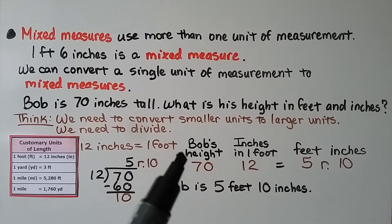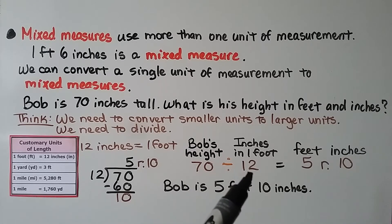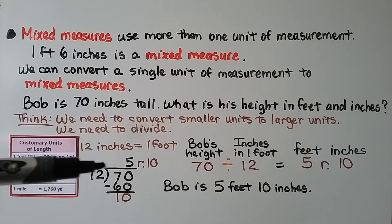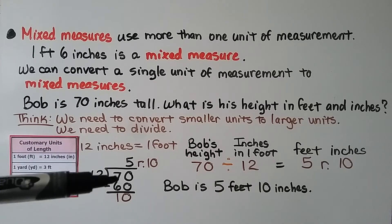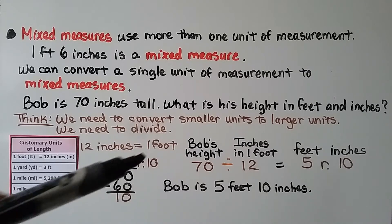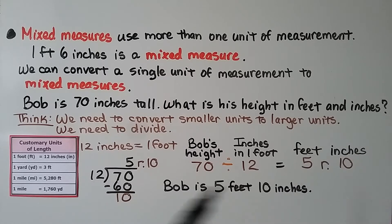His height is 70 inches. We divide 70 by 12 using long division. 12 fits into 70 five times because 12 times 5 is 60, and that leaves 10 left over. 12 can't fit into 10, so we have a remainder of 10. The quotient of 5 is the feet, and the remainder of 10 is the inches left over that do not quite equal one foot. That means Bob is 5 feet 10 inches.